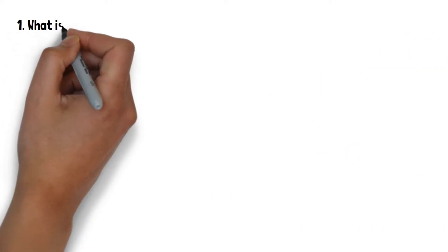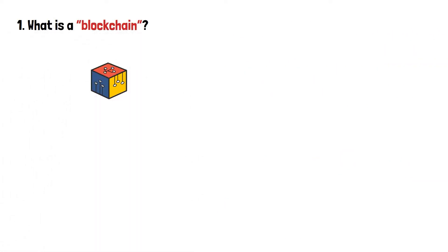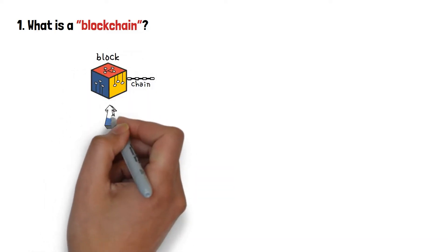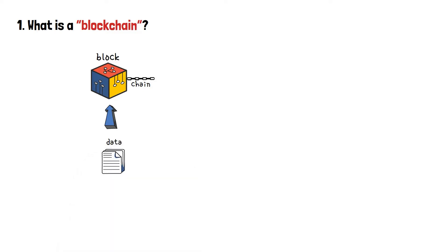So, what is a blockchain? The term actually consists of two words, a block and a chain. A block is a place where we store data and various types of information, in the same manner as you would store your butter and milk in a fridge, to keep them cool.